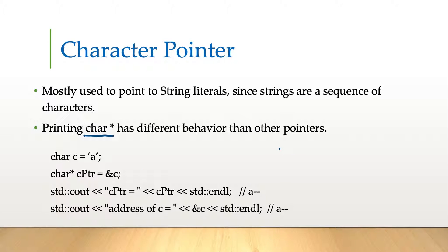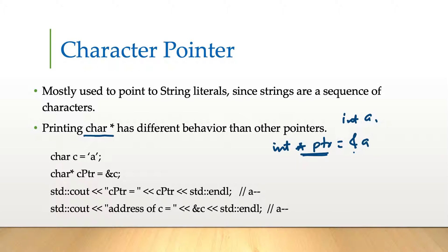With other pointers, if we have an int pointer and we try to print it where 'a' is an int, it will print the address stored in that pointer. Whereas if we compare it to a character pointer — it's also storing a character — when we try to print this, it will print the actual character followed by some random characters.